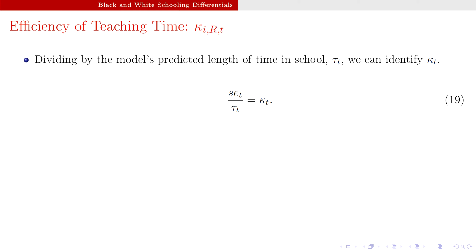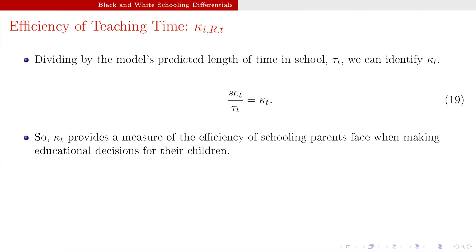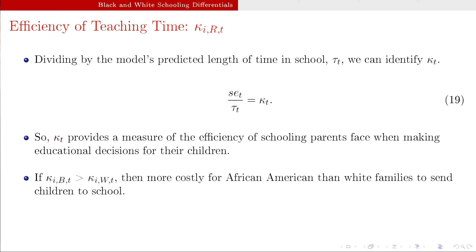Kappa provides a measure of the efficiency of schooling that parents face when making educational decisions — or more precisely, think of it as inefficiency: as kappa goes up, schooling becomes more costly, the marginal cost rises. Therefore, we expect kappa for African-American families to be much higher than kappa for white families, because the funding per pupil was much less and the quality of instruction materials was far inferior.